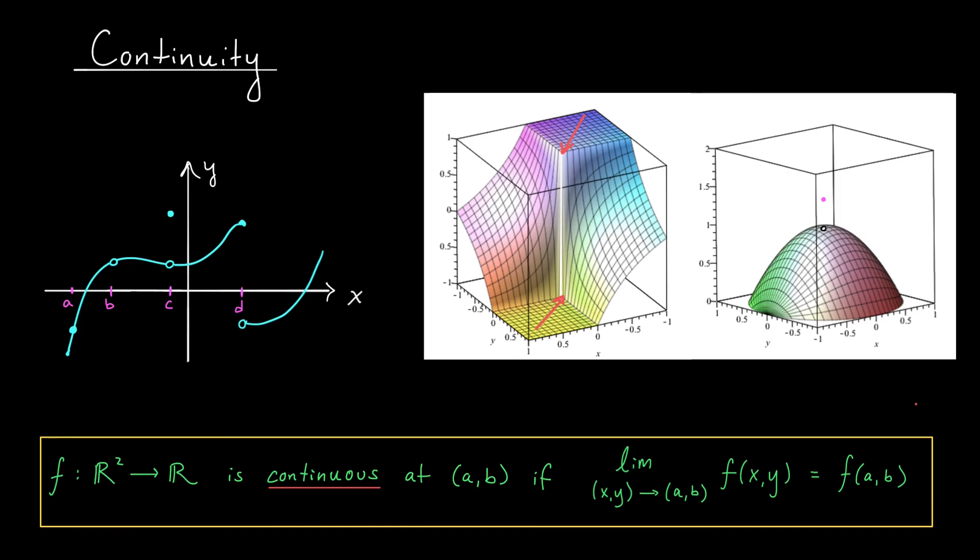Our definition is very much analogous to what we knew in Calc 1. A function z equals f of x, y is continuous at a, b if it's defined at a, b, the limit exists at a, b, and these values coincide. Sometimes we write this simply as the limit as x, y approaches a, b of f of x, y equals f of a, b, with the understanding that if we're saying that these two quantities are equal, they must both exist.